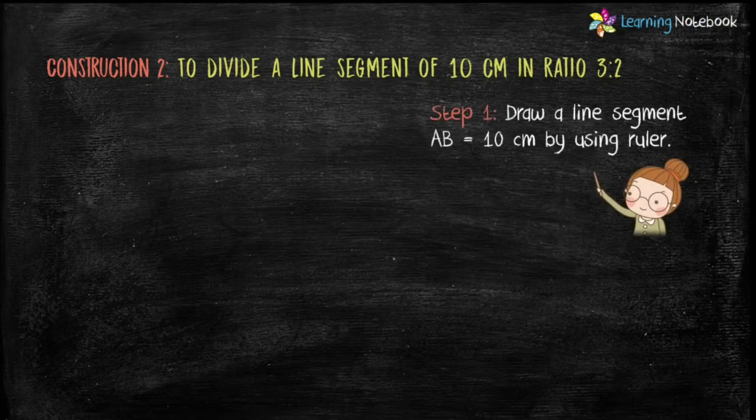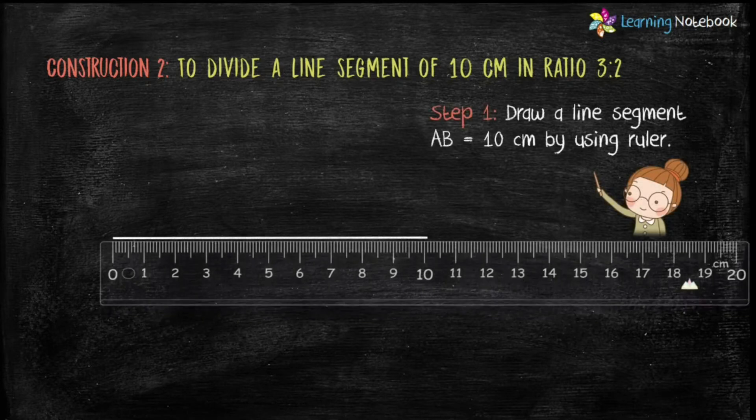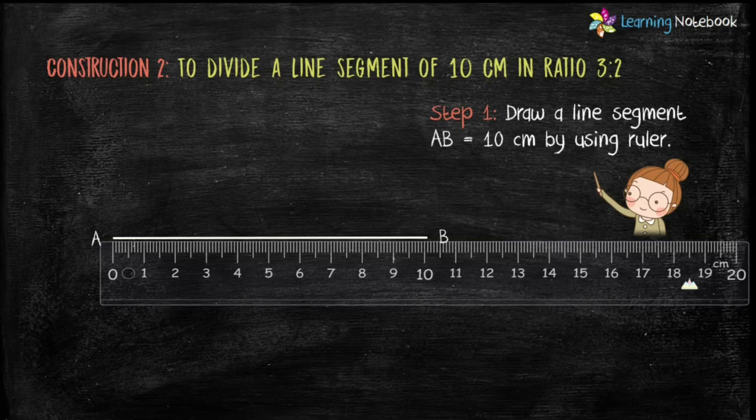Step 1 is draw a line segment AB equals to 10 cm by using a ruler.